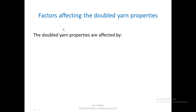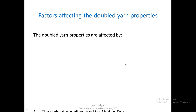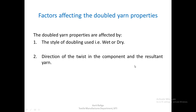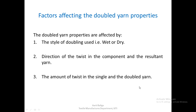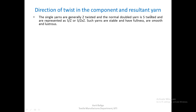The doubled yarn properties are affected by three main factors: the style of doubling (wet or dry), the direction of twist in the component and resultant yarn (S or Z), and the amount of twist in the single as well as the doubled yarn. We will now see how each of these factors determines the yarn properties, and how we can engineer yarns with the right properties for a given application.